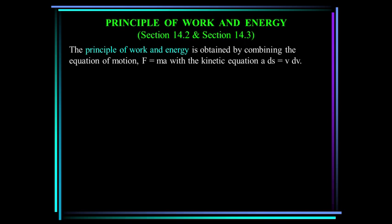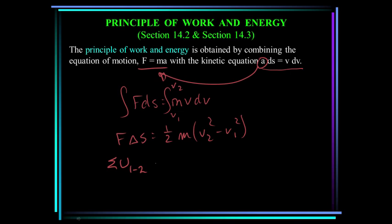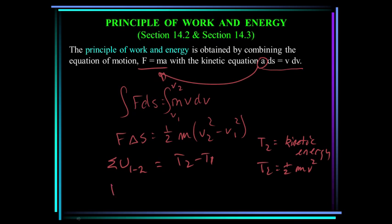So now let's derive the principle of work and energy. Starting with Newton's equation F equals MA and the kinematic equation A·dS equals V·dV from chapter 12, we can substitute A in and get F·dS equal to M·V·dV. Integrating both sides gives F·delta S equal to one-half m times V2 squared minus V1 squared. We can rewrite this as: the summation of all the work done by all the forces between points 1 and 2 is equal to T2 minus T1, where T is defined as kinetic energy equal to one-half m·V squared.